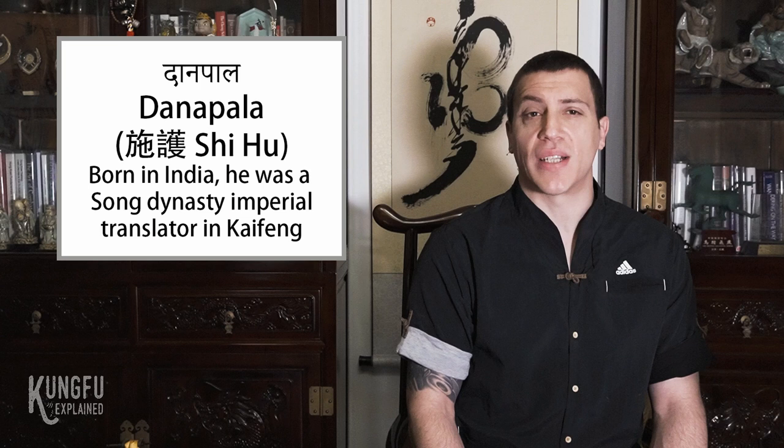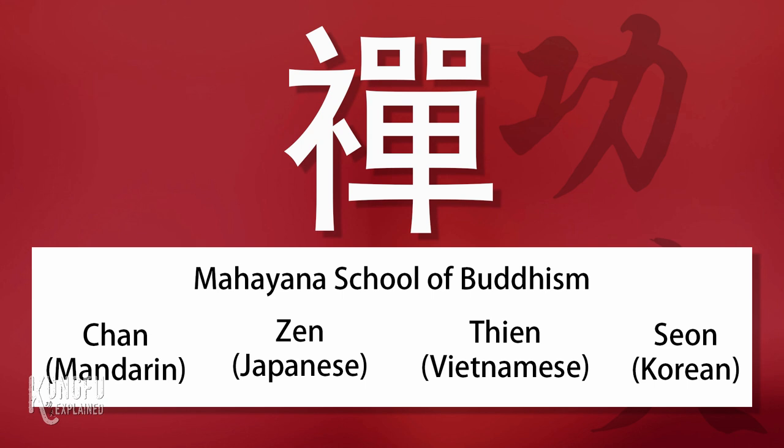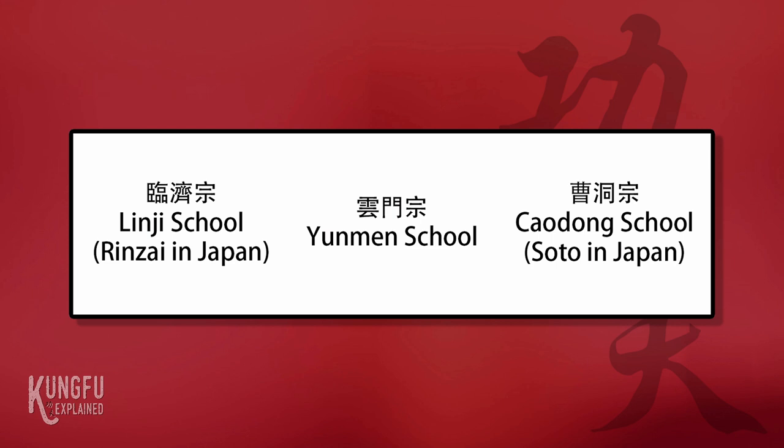The Song government set up a department specifically for the translation and printing of Buddhist texts, and it is said that more monks traveled from China to India during the Song Dynasty than during the preceding Tang Dynasty. The dominant sect of Buddhism during this period was the Chan sect. Huineng's southern sect of Chan, through three centuries of development, became more aligned with Taoist and Confucian ideas. Of the five houses of southern Chan, the most popular were the Linji School, the Yunmen School, and the Cao Dong School. Chan master Yixuan established the Linji School in Hebei province at the Linji Monastery during the mid-Tang Dynasty.